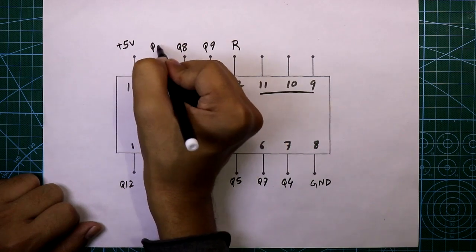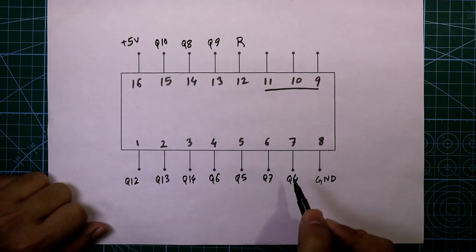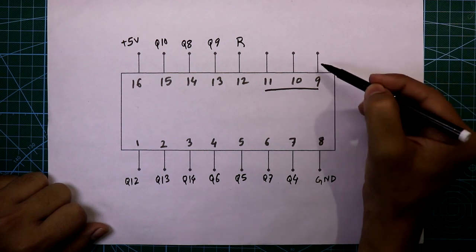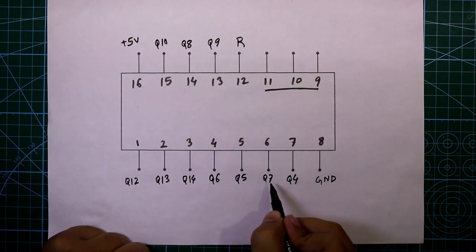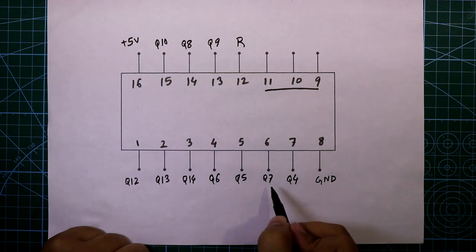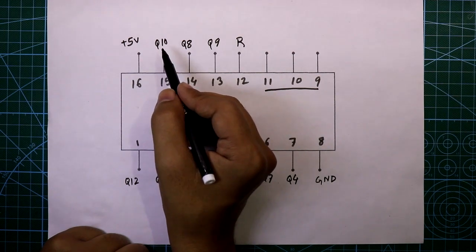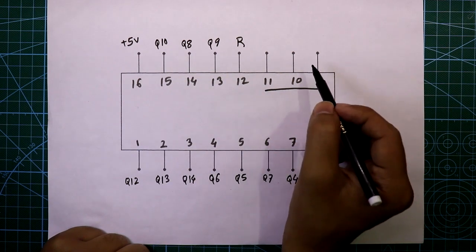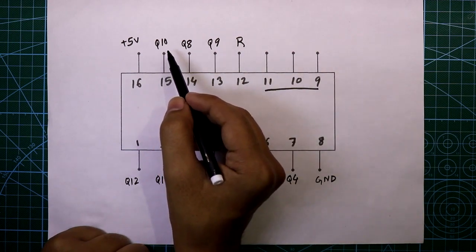Q4 means 2 to the power 4, which equals 16, so whatever the input frequency is, it will be divided by 16. If you connect your output to Q7, that means 2 to the power 7 equals 128, so the input frequency is divided by 128. Similarly, Q10 means 2 to the power 10, which equals 1024. So if your input frequency is 1024 Hz and you divide with Q10, your output frequency will be 1 Hz.